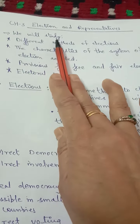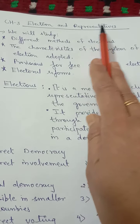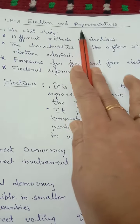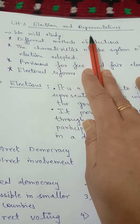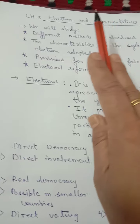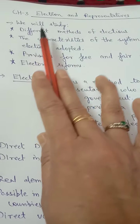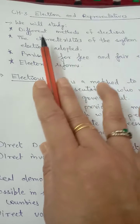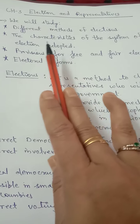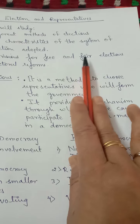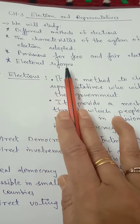Today we are beginning the third chapter of Class 11 Political Science. The name of the chapter is Election and Representatives. In this chapter, we will study different methods of elections, the characteristics of the system of election adopted, provisions for free and fair elections, and electoral reforms.